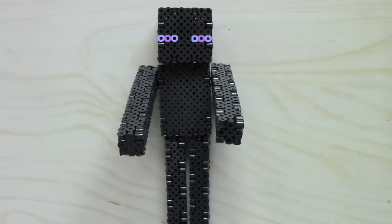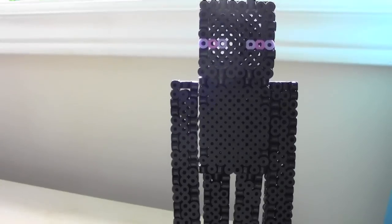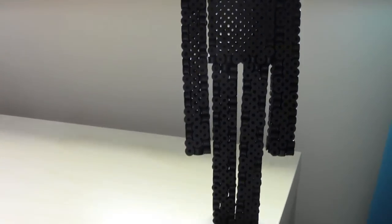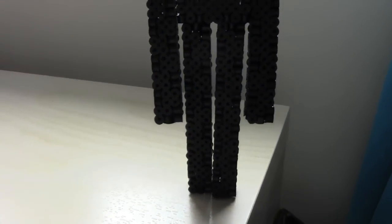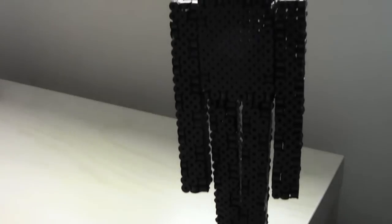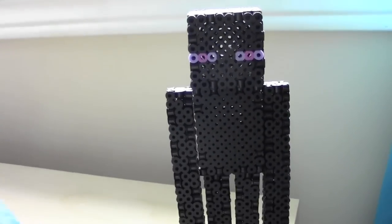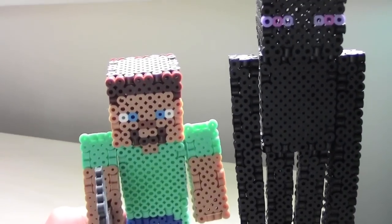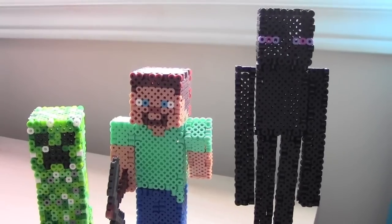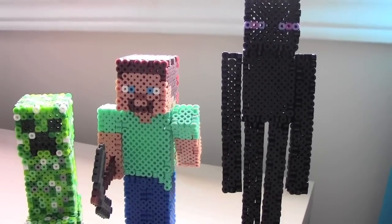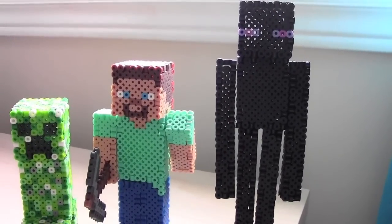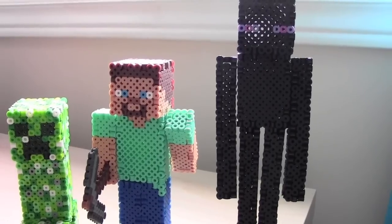Alright guys, so that is how you make an Enderman 3D Perler Bead figure. As you can see, Enderman can stand on its own if you balance it right, and he stands quite tall, a lot taller than Steve who is just at his shoulder. So that is my third 3D Minecraft figure that is made from pieces that will assemble together like a jigsaw puzzle.